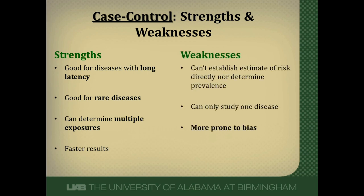There are also limitations. Case control studies cannot establish risk directly — risk is the incidence of developing new disease, and there is no new disease in a case control study since it's already happened. We artificially select the number of cases and controls, so we can't determine risk directly. We can only study one disease, unlike cohort studies. And as mentioned, this study design is much more prone to bias and systematic errors because of its retrospective nature and the way cases and controls are selected.